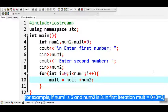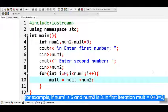For example, if num1 is 5 and num2 is 3, in first iteration mult equals 0 plus 3 is equal to 3.